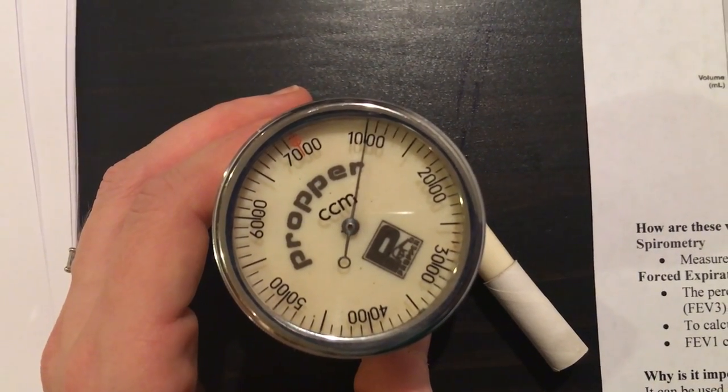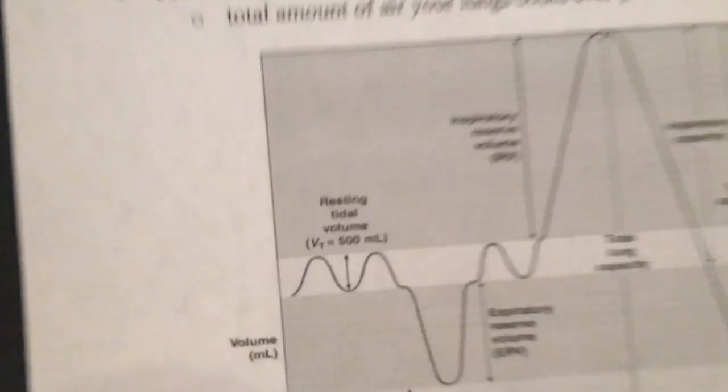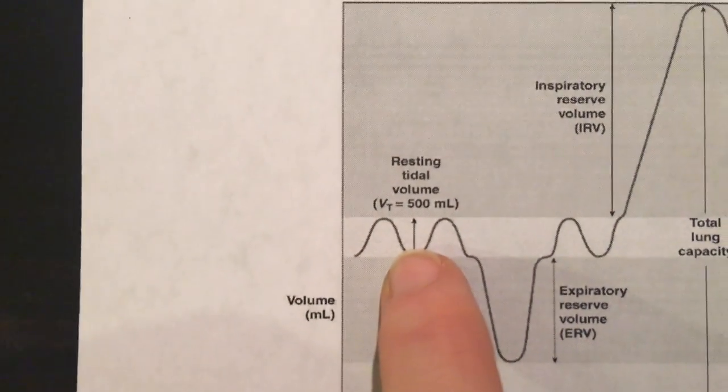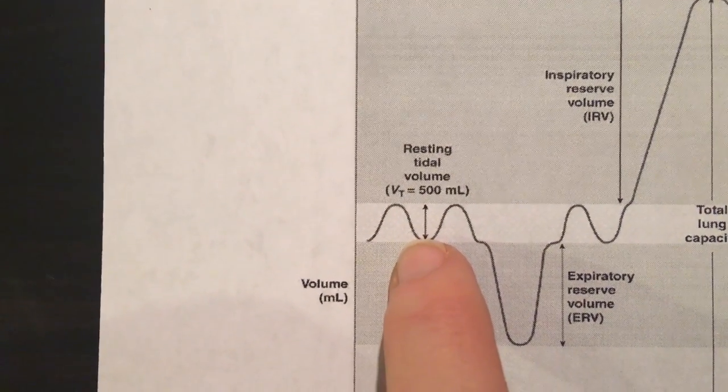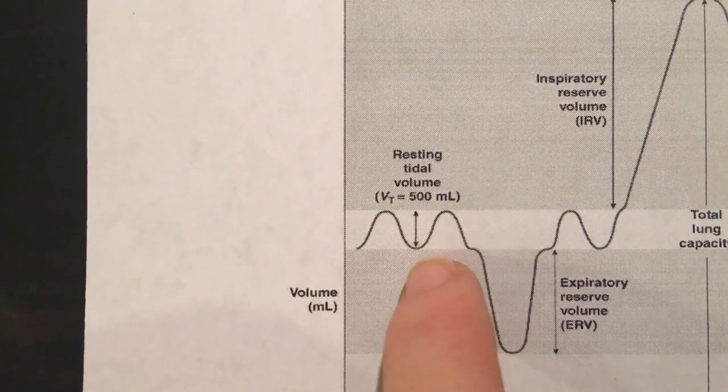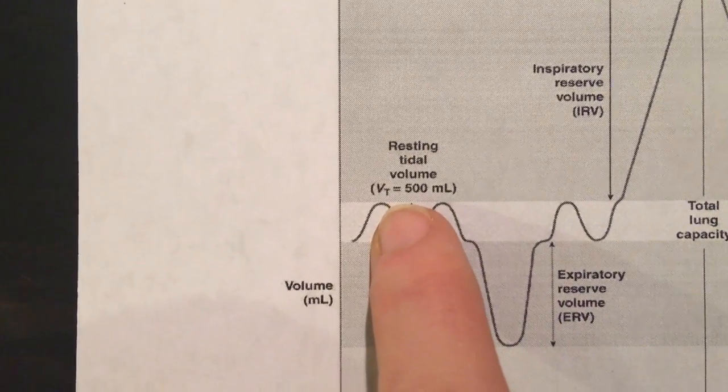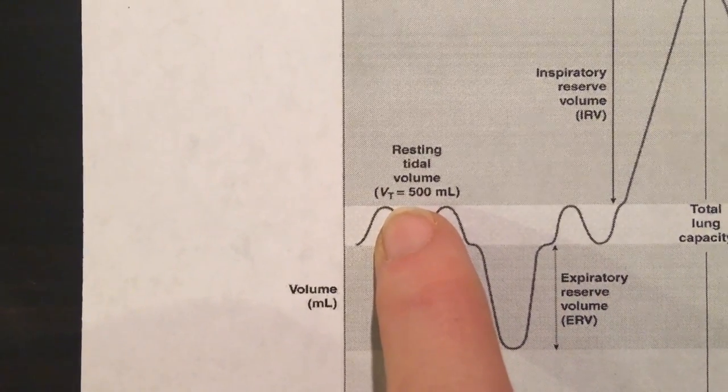Remember that tidal volume, resting tidal volume right here, is going to be the amount of air that you breathe in and out in your lungs in a quiet breath. On average, it should be around 500 milliliters for both men and women.